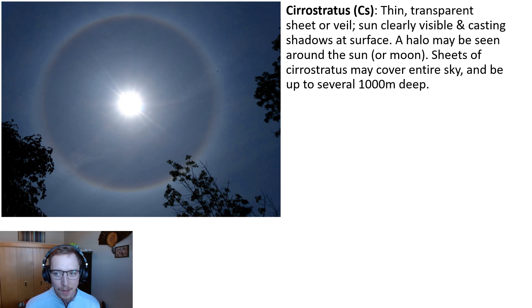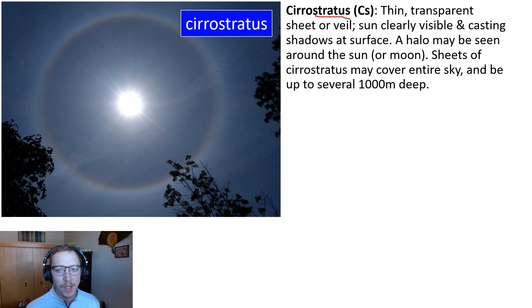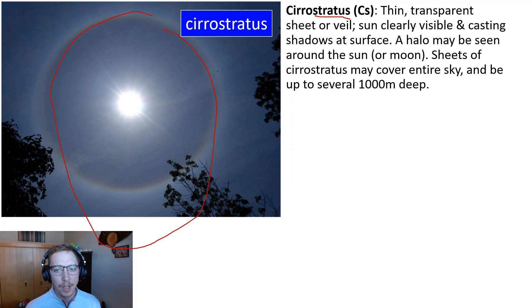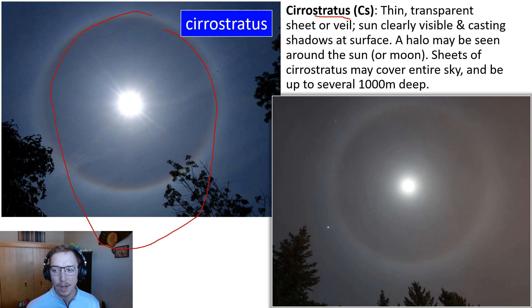Then we get into cirrostratus clouds. These are a thin, transparent sheet or veil — remember stratus means sheet or continuous. The sun is clearly visible and casting a shadow on the surface, but it gives off this halo appearance. Sheets of cirrostratus may cover the entire sky and be several thousands of meters deep. Here's another example showing the sun on the left and the moon on the right, both with this haloing effect.